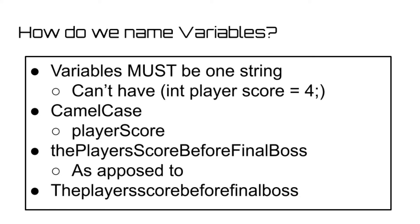The last topic we'll be covering today is the naming of variables, which may seem odd, but it's extremely important when trying to debug your code. Variables must be one continuous string, and so if you wanted to make a variable that stored the player score, you'd have to find some way to combine the words, as you can't make an integer of player score with a space between the two words.